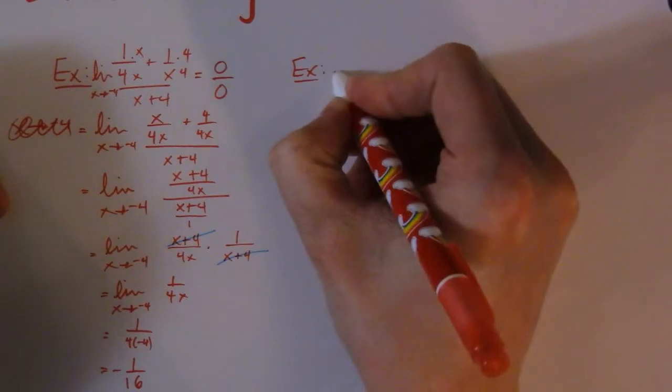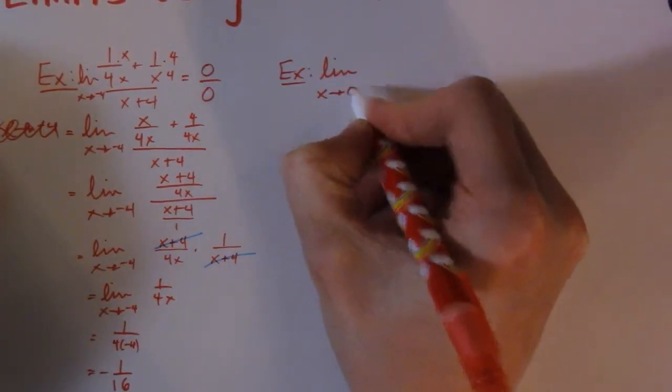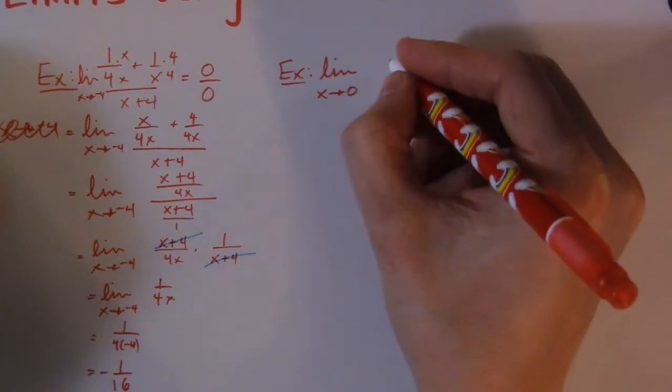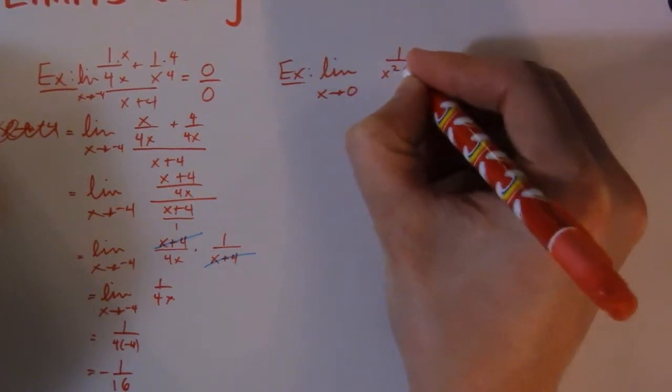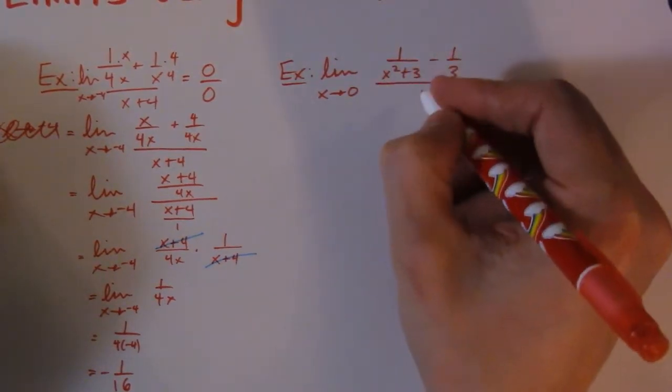I've got some room over here. So let's call it the limit as x goes to 0 of [1 over (x² + 3)] minus [1 over 3], all divided by x.